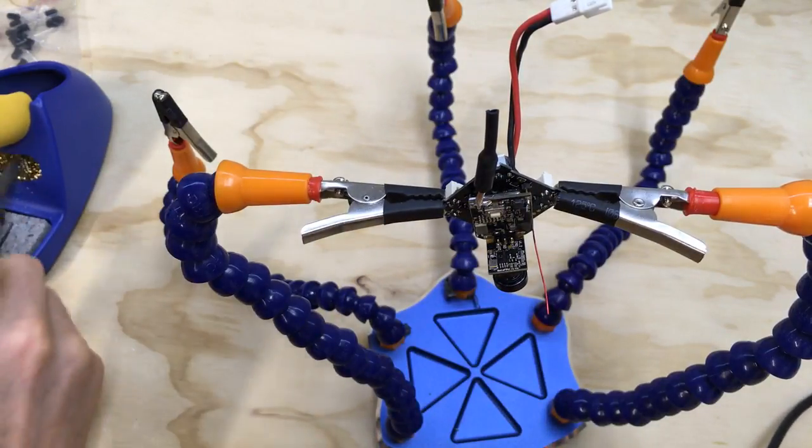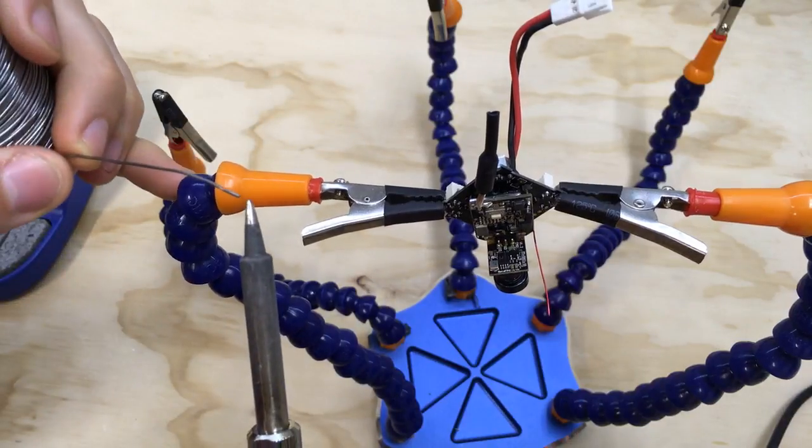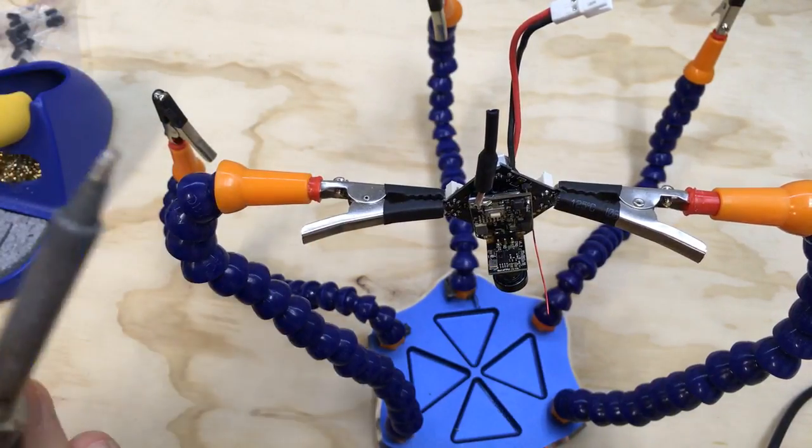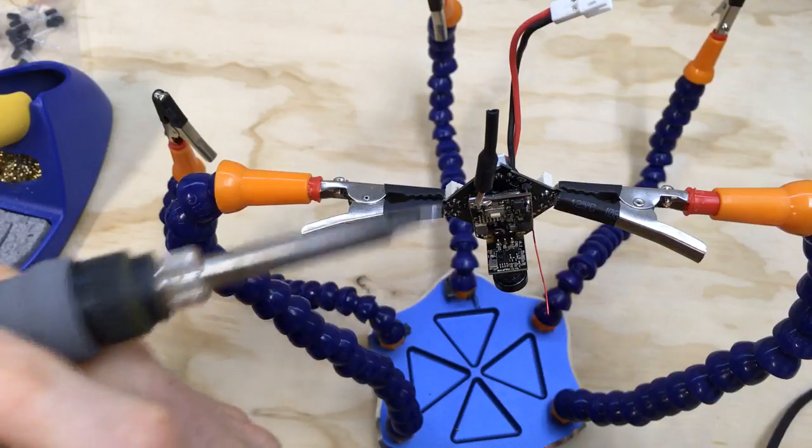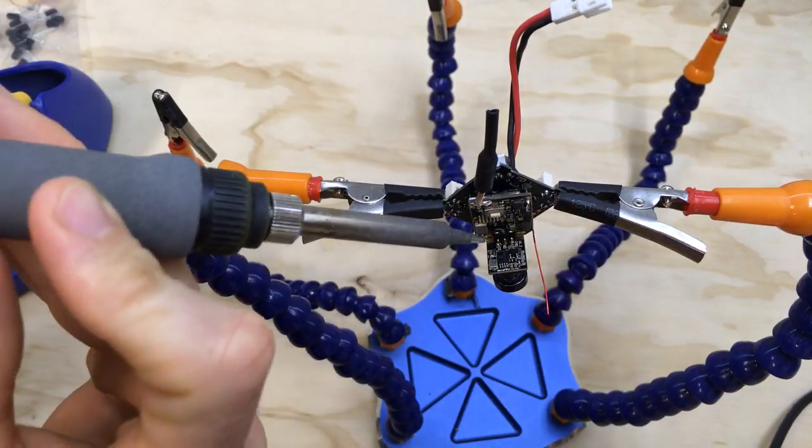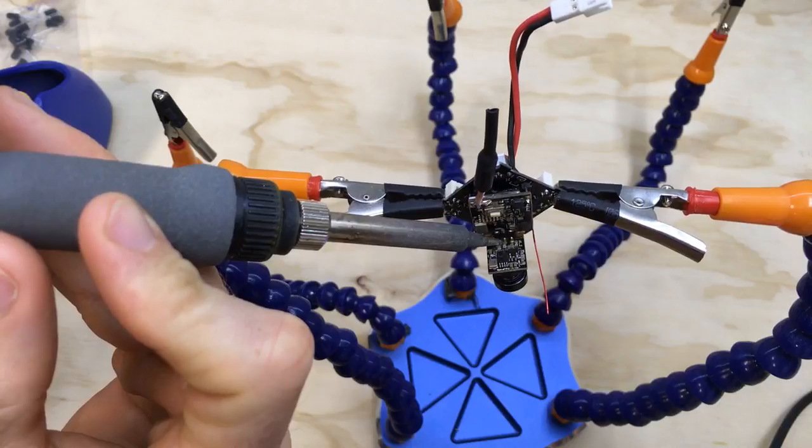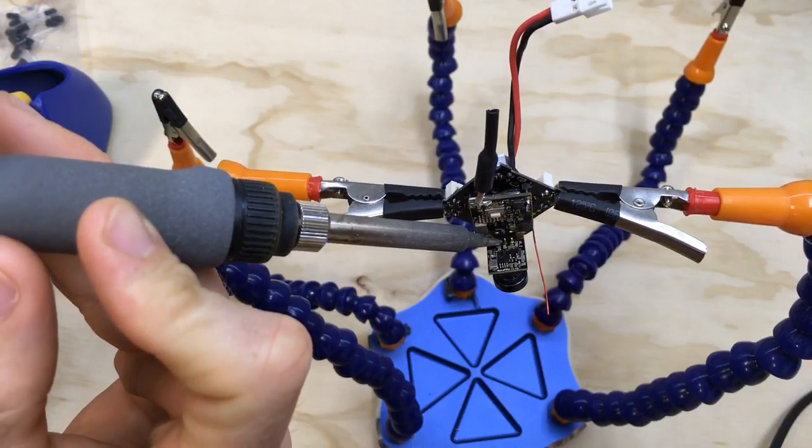So I put a little bit of flux on there, and that will help the solder flow and not bridge. And I'm just going to heat up that one pin where the video signal is going. All right, good deal.